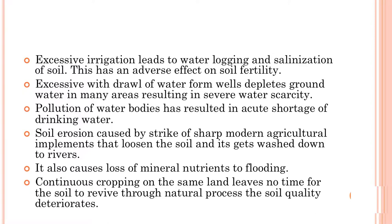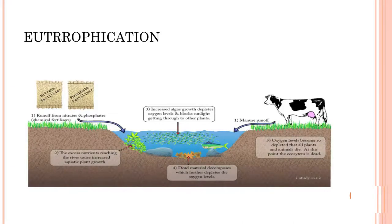Pollution of water bodies has resulted in acute shortage of drinking water. Soil erosion is caused by sharp modern agricultural implements that loosen the soil, which gets washed down to rivers, also causing loss of mineral nutrients through flooding. Continuous cropping on the same land leaves no time for the soil to revive through natural processes, and the soil quality deteriorates. This is a picture of eutrophication, which we will take up in detail in our next program.